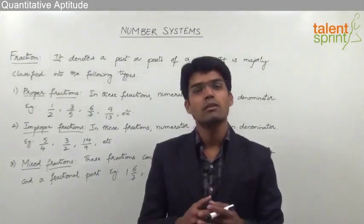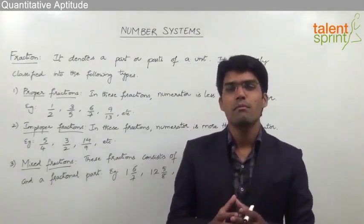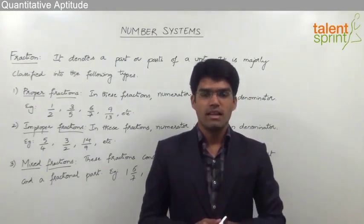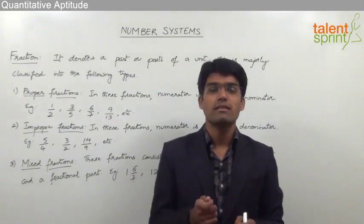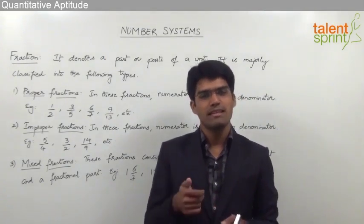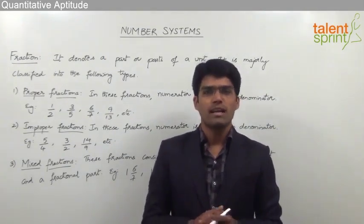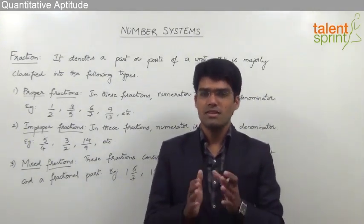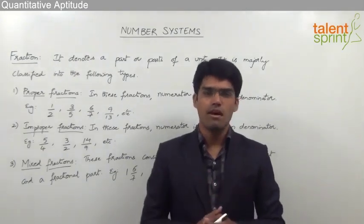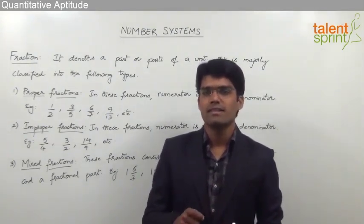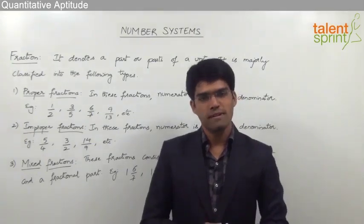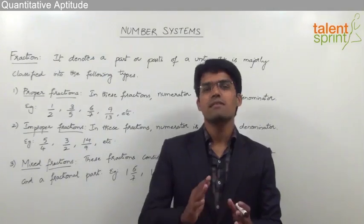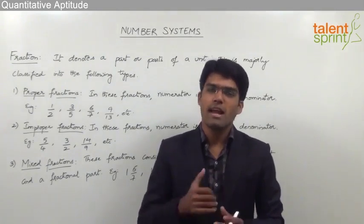Let us now learn what is meant by a fraction and the various types of fractions. Rational numbers are those numbers which can be expressed in the form a/b where b is not equal to 0 and both a and b are integers. Rational numbers can either be integers or fractions depending on the denominator. If the denominator is equal to 1, then it is an integer. If the denominator is other than 1 but not equal to 0, then it is considered a fraction.